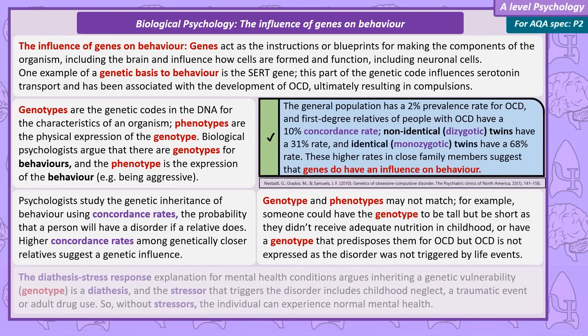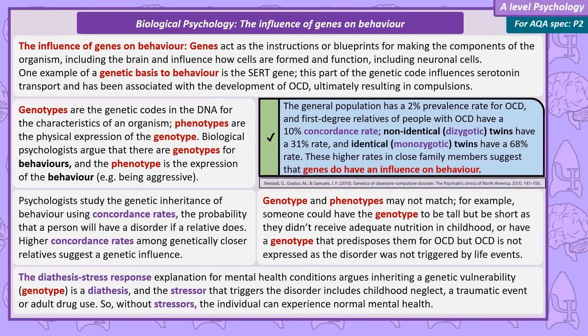Not everyone with a genetic vulnerability to OCD will go on to develop the disorder. This is called the diathesis-stress model. The genetic vulnerability is the diathesis, and the stressor would be things like childhood neglect, a traumatic event, or adult drug use. Without the presence of the stressor, the individual can have normal mental health. This shows that biological processes alone are not a complete explanation of behaviour.